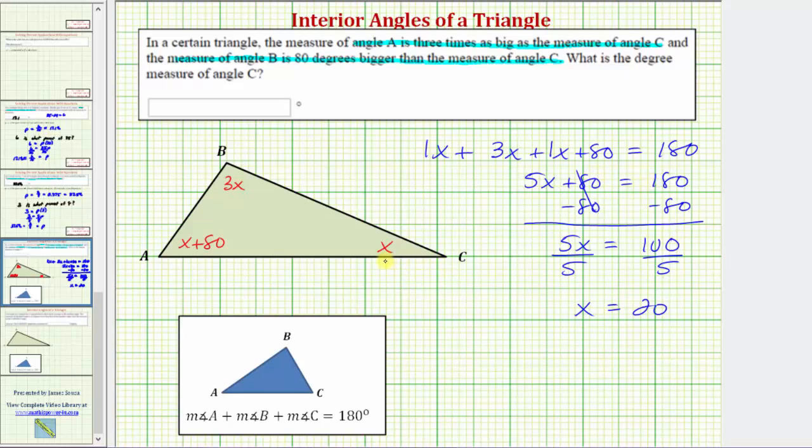Which means angle C measures twenty degrees, which is what the question is asking for. So we enter twenty; the units of degrees is already here.